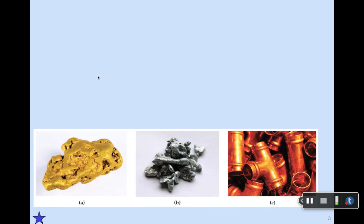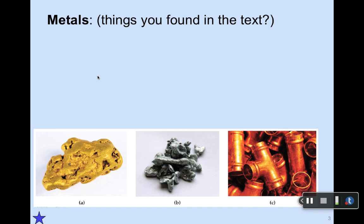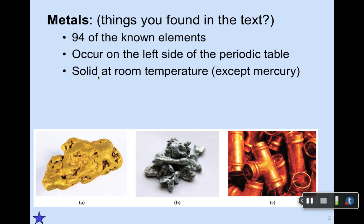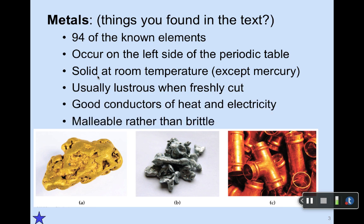Here are some examples of chemical elements — each representing one category. These are metals. Some characteristics that describe metals include: they make up 94 of the known elements, quite a few. They are on the left side of the periodic table. They are solid at room temperature, except for mercury. Things like coins and keys that jingle in your pocket are metals. Usually they're lustrous when freshly cut — shiny in that sense. They are good conductors of heat and electricity, and they're malleable, meaning they can be pounded into sheets rather than being brittle.